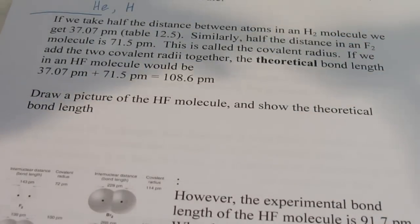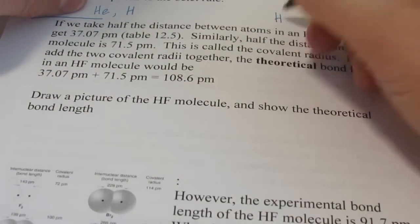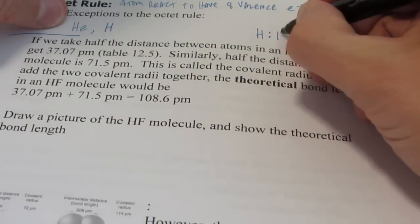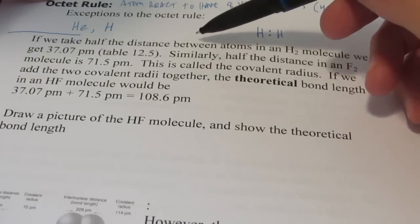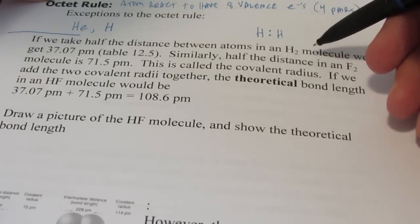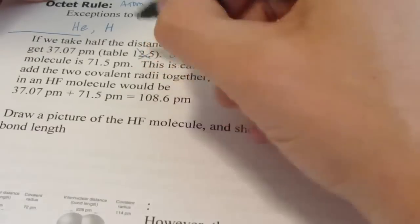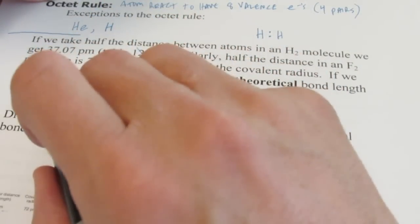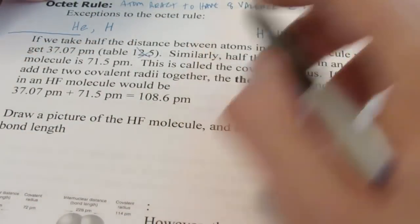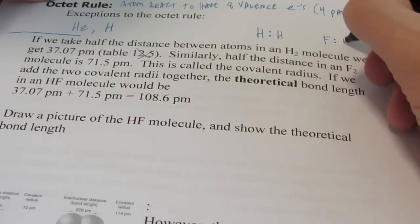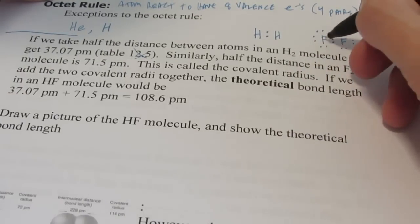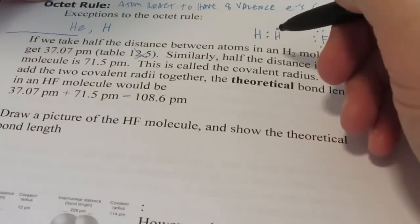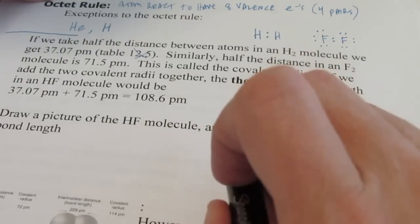Now for H2, remember that Lewis structure looked like this. We had a hydrogen atom sharing a pair of electrons. That gave them both a noble gas configuration for at least part of the time. If we take half the distance between the atoms in the hydrogen molecule, we get a distance of about 37 picometers. Similarly, for two atoms in fluorine, which by the way I'll quickly draw the Lewis structure for, they also share a pair of electrons. If I take half the distance between the two nuclei of the fluorine atom, we get about 71.5 picometers. We call this the covalent radius.